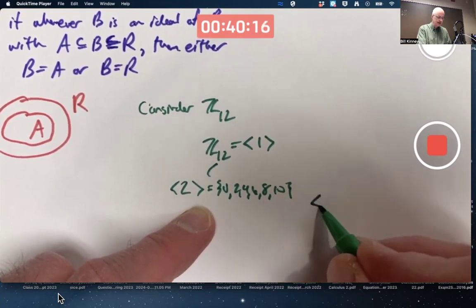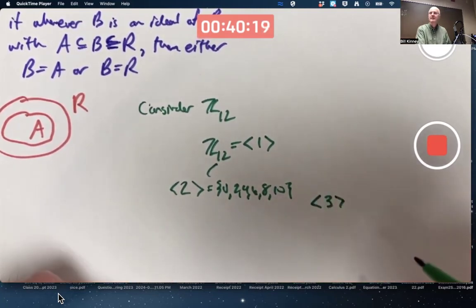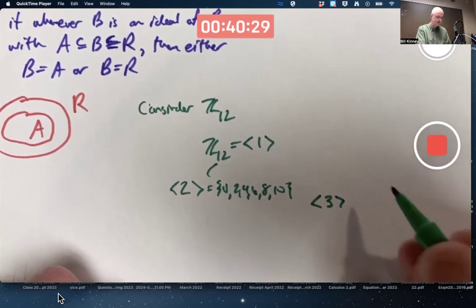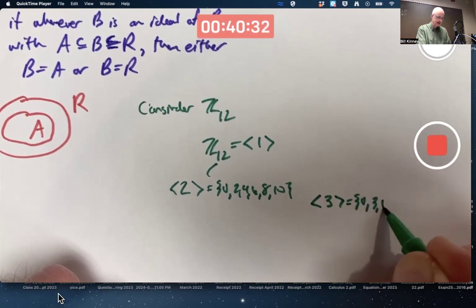We also have the cyclic subgroup generated by 3, the same as the principal ideal generated by 3. That consists of 0, 3, 6, 9. It's got 4 elements: 0, 3, 6, and 9.